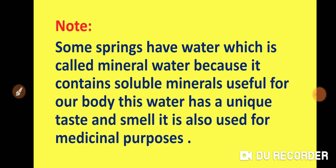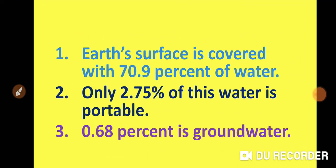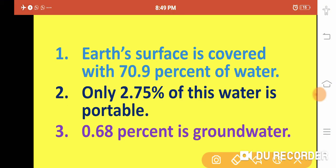I have taken the percentage of water present in nature — this is very important and questions from this topic appear in target examinations. The Earth's surface is covered with 70.9 percent of water. Only 2.75 percent of this water is potable water.